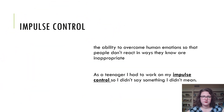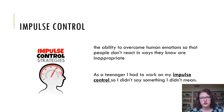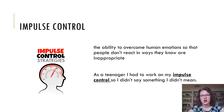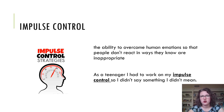The first vocabulary term is impulse control — the ability to overcome human emotions so that people don't react in ways that are inappropriate. Think about a time when a teacher said something that made you really mad. Your first impulse might be to yell or storm out, but you know that would get you in more trouble, so you take a deep breath and push that impulse down. That's impulse control. My example sentence: as a teenager, I had to work on my impulse control so I didn't say something I didn't mean.